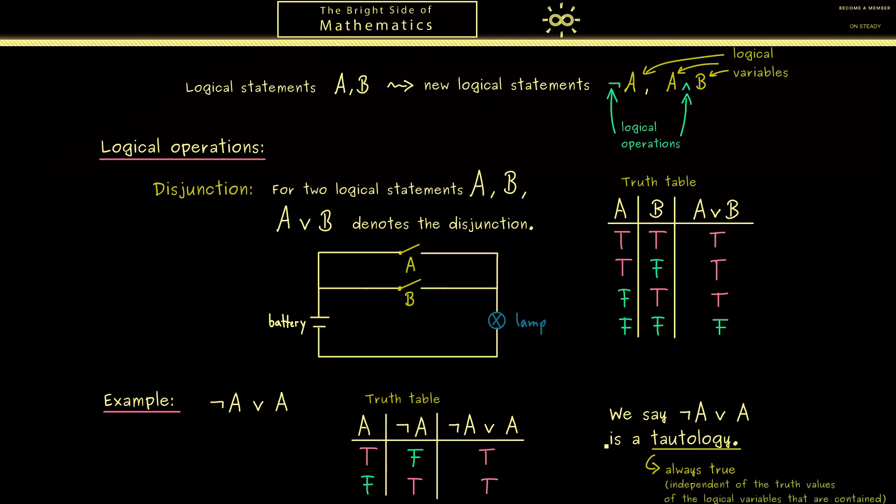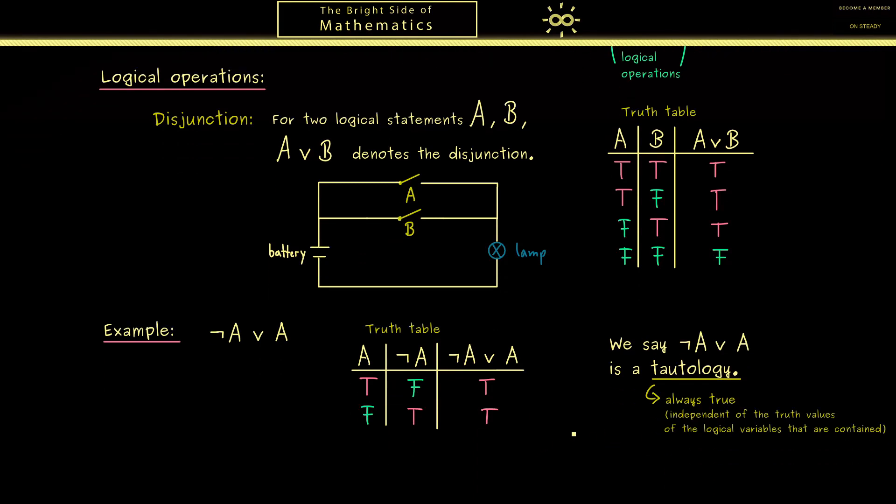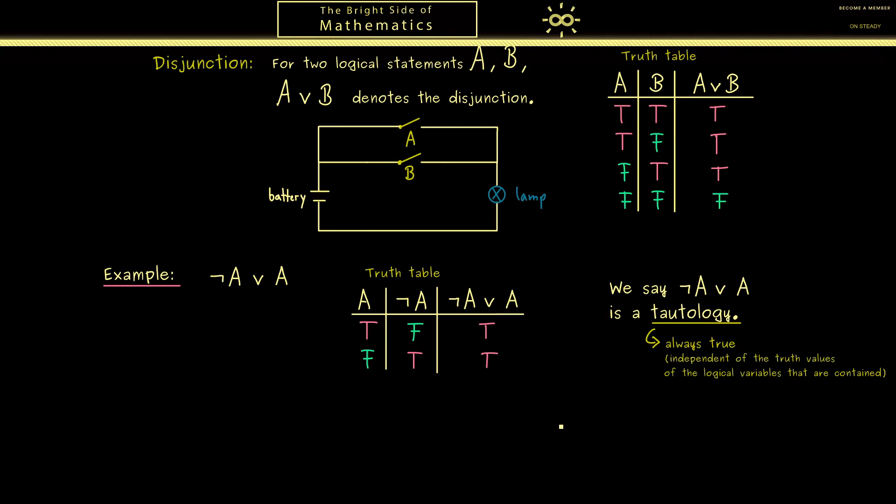Of course, this was a simple example. You could have many different logical variables in the formula, but then the truth table would be much bigger. Knowing which combinations are tautologies is very helpful, because you always can substitute this combination with just the true.